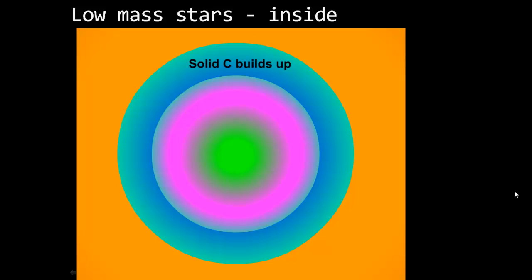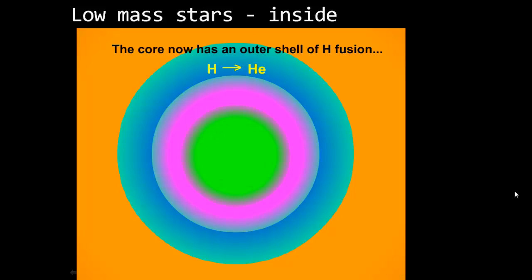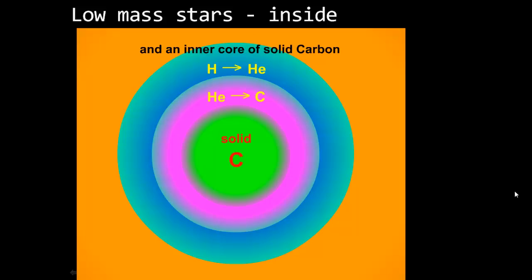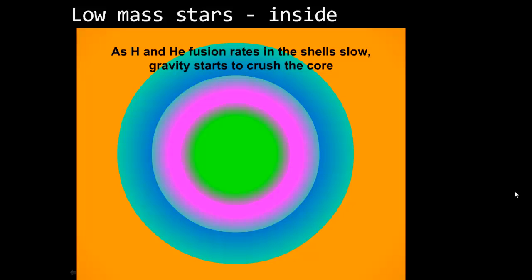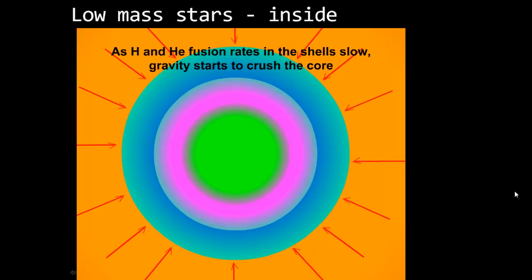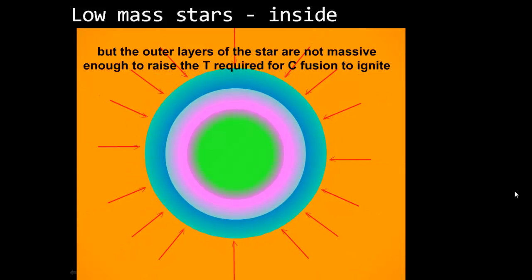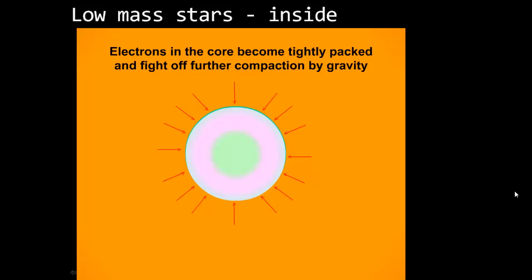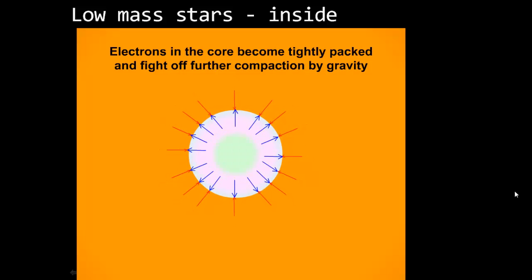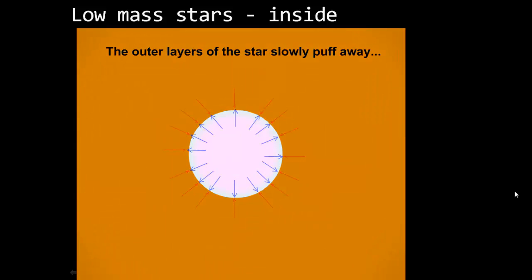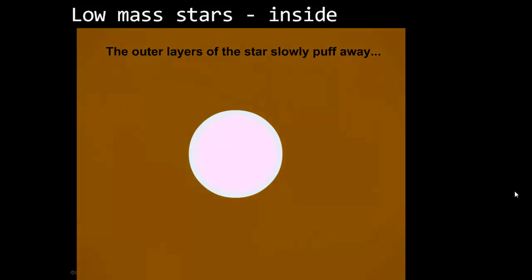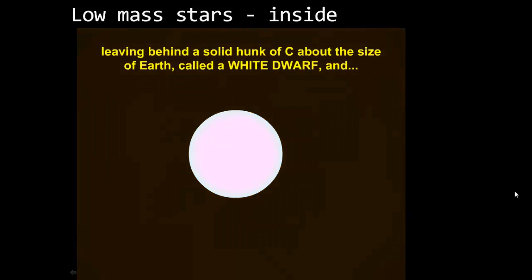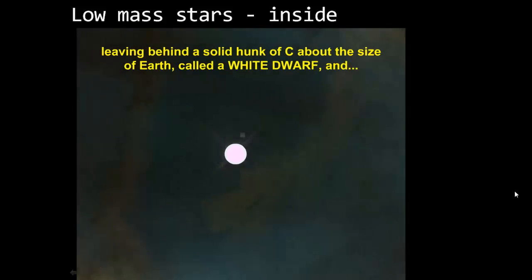Now we have shells of carbon, helium, and hydrogen. The carbon builds up with hydrogen burning, helium burning, and then the carbon core. As hydrogen and helium are used up, the rate slows, less radiation pressure means gravity starts to crush the core, but it's not enough to make the carbon burn. The electrons in the core become tightly packed and do not allow any further contraction — this is electron degeneracy. The outside of the star drifts off into space, leaving the white dwarf and the planetary nebula.